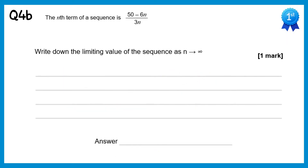Now we need to find the limiting value. If we lose the 50, we end up with negative 6n over 3n. Cancel the n's and negative 6 over 3 is negative 2.